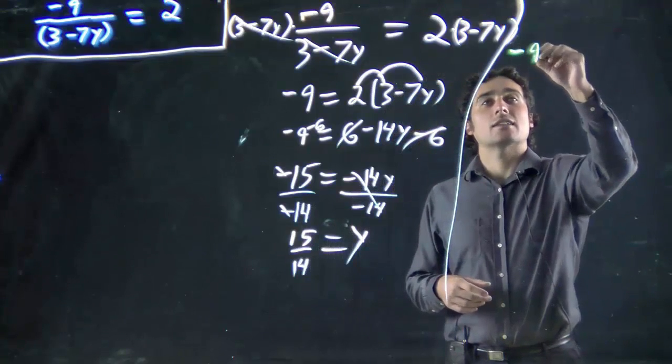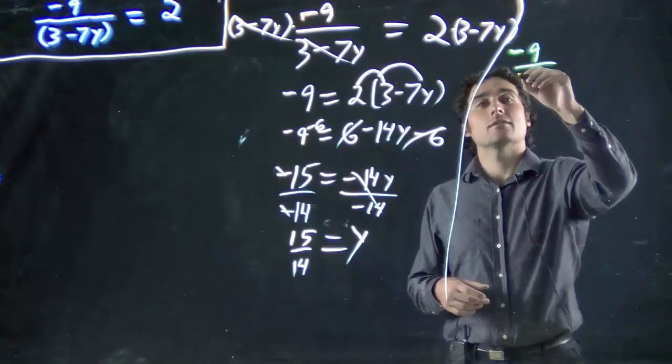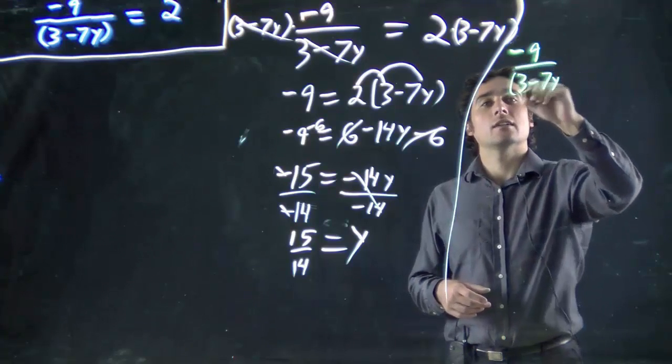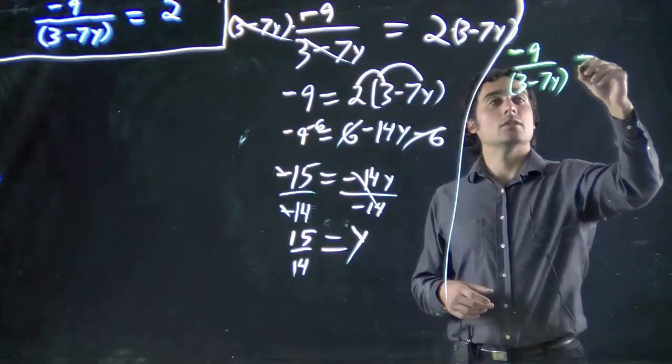We still start with the same thing. In this case, I'm going to leave the bracket in there. We've got 3 minus 7y equals 2.